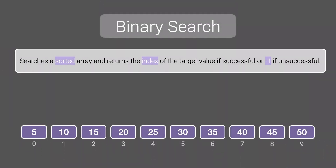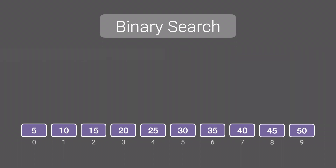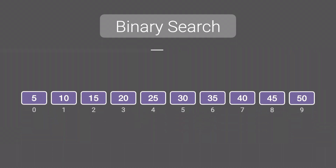Binary search is used to efficiently search a sorted array and return the index of the target value if successful, or negative 1 if unsuccessful. The cost of a successful and unsuccessful search are both big O of log n, with constant space.